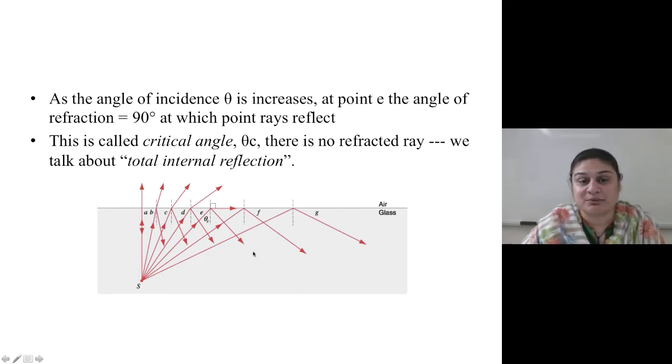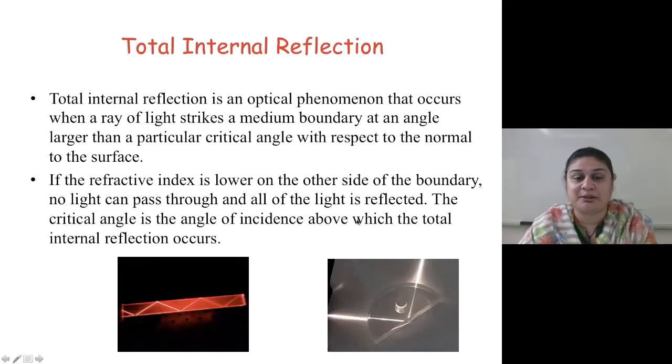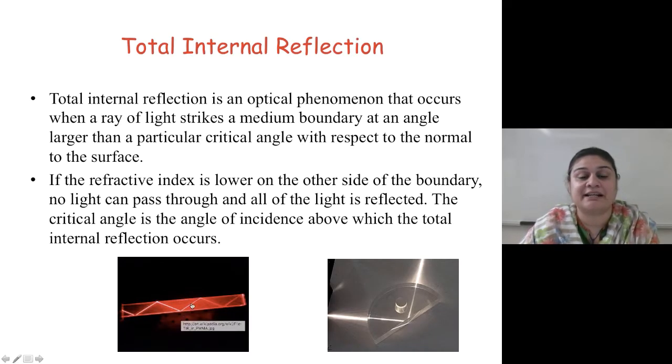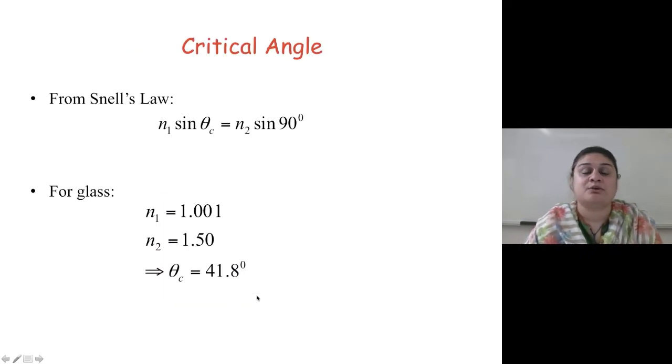One of the things that's really important to understand is that this total internal reflection, when it happens through a medium, let's say glass, it can be reflected again and again. So, what is that critical angle at which this total internal reflection happens?